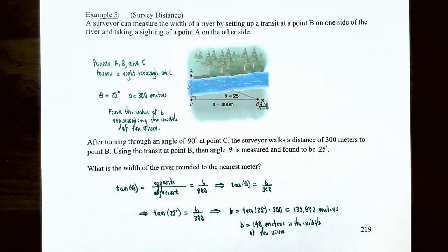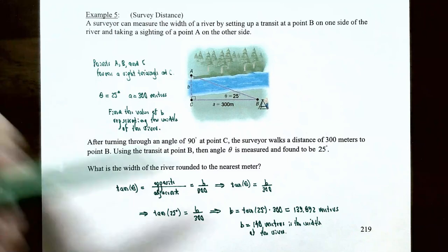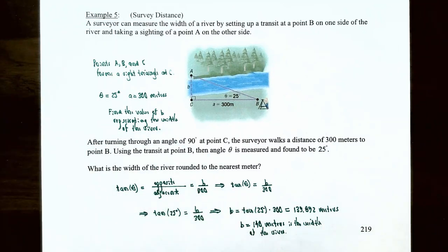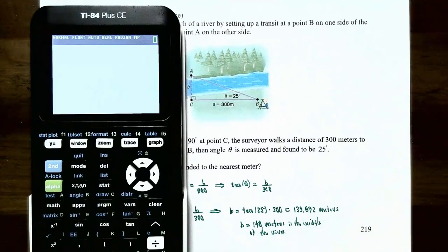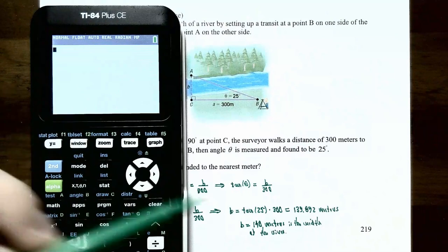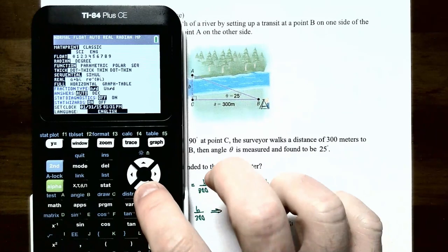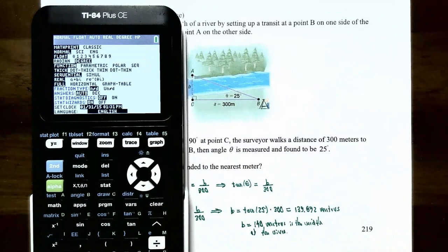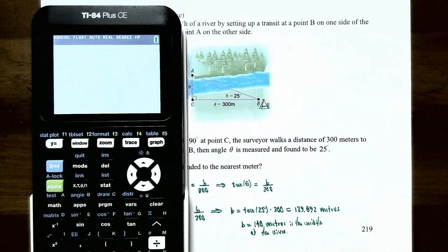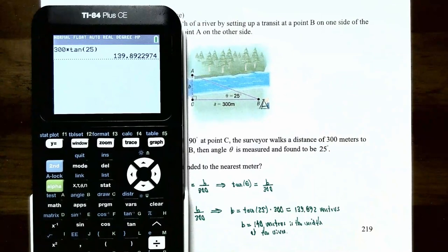With θ = 25 degrees, B = 300·tan(25°). Using a calculator — make sure it's in degree mode (go to Mode and select degrees) — 300 times tan(25°) is approximately 139.892. So the width of the river is approximately 139.892 meters, or rounded to the nearest meter, the river is 140 meters wide.